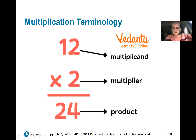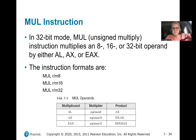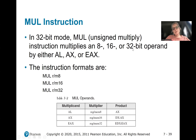So we all are using the same terminology: the multiplicand is the top number, the multiplier is what we're multiplying by, and the product is the result. The MUL instruction is used for unsigned multiplication. We can multiply by 8, 16, or 32-bit operands.